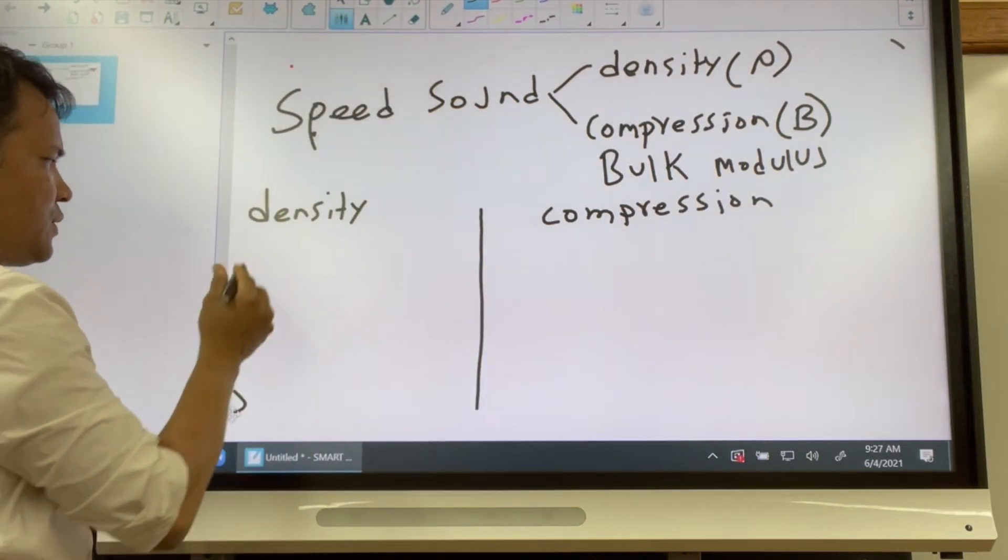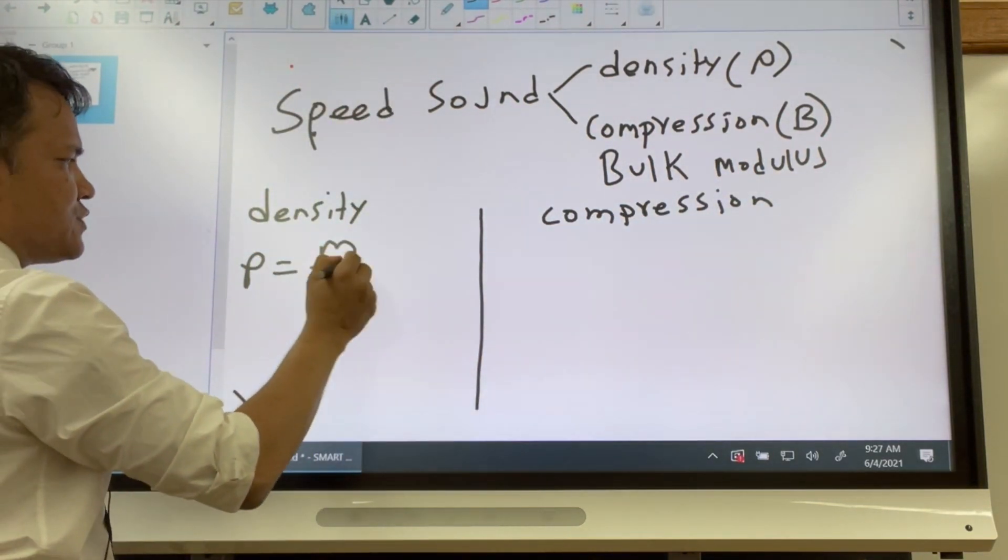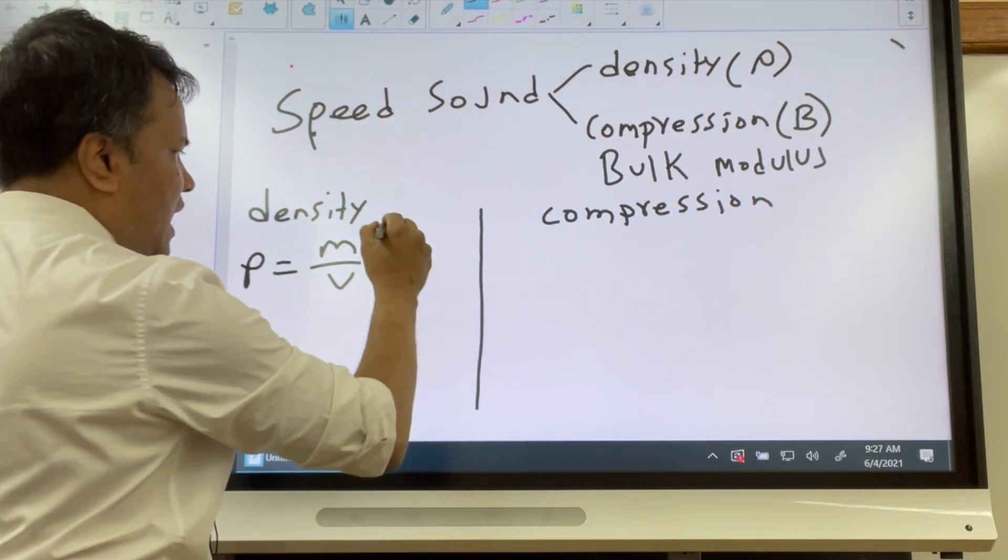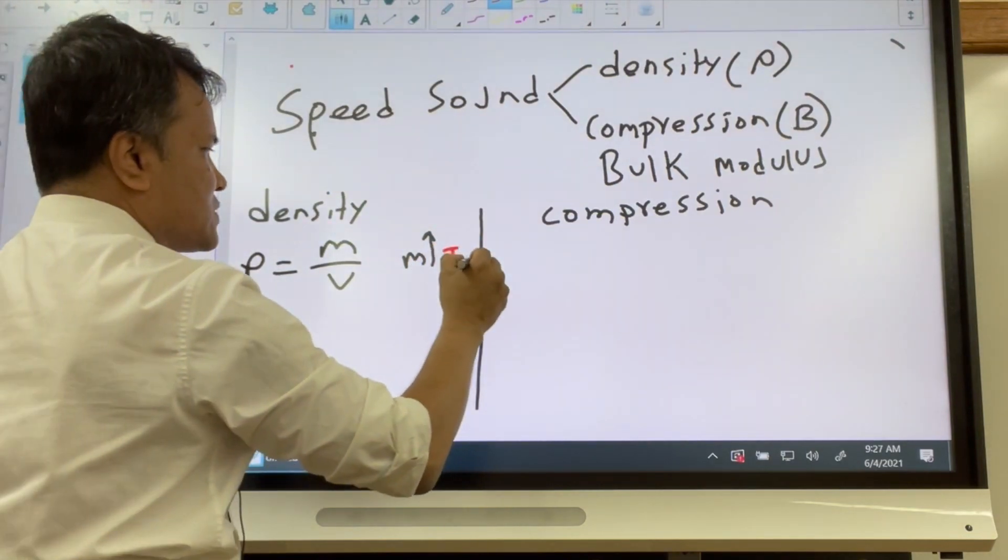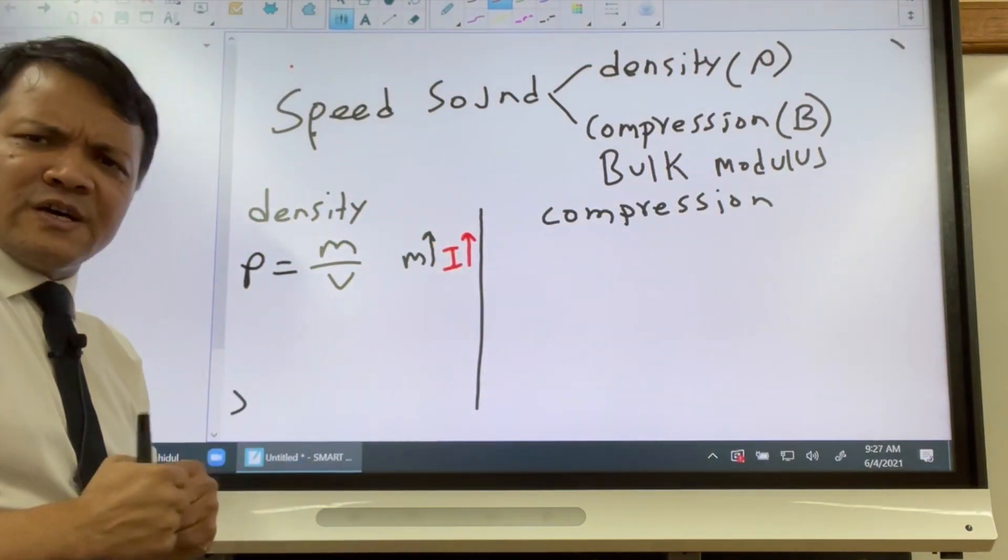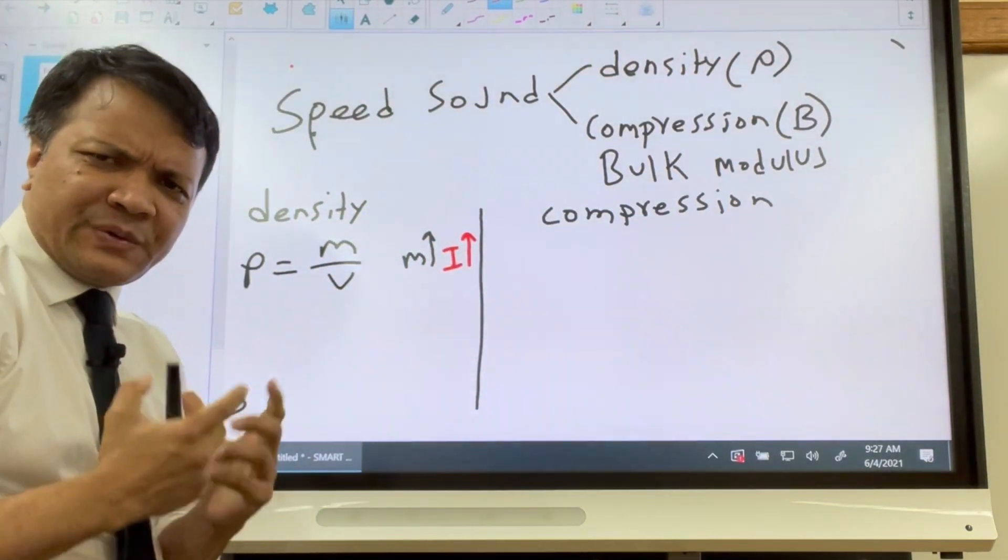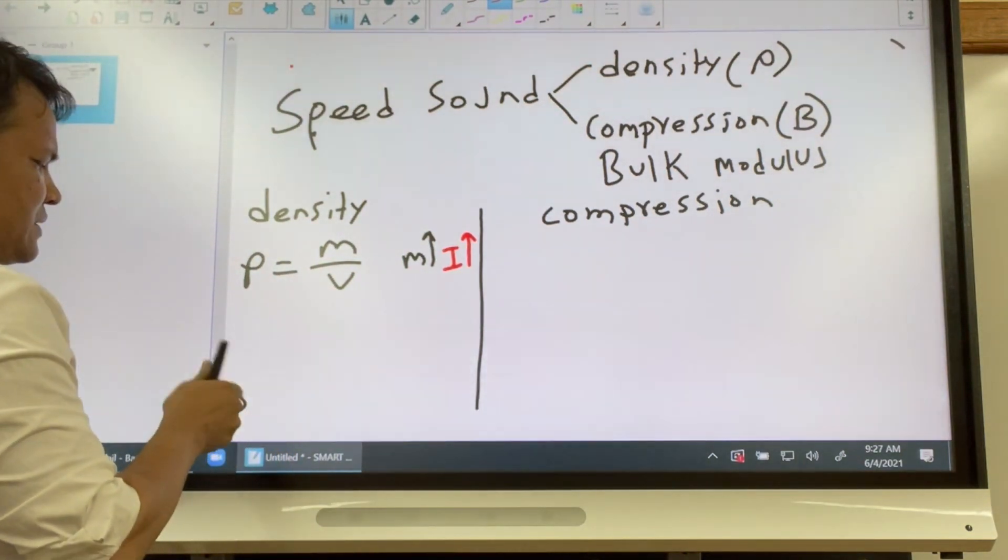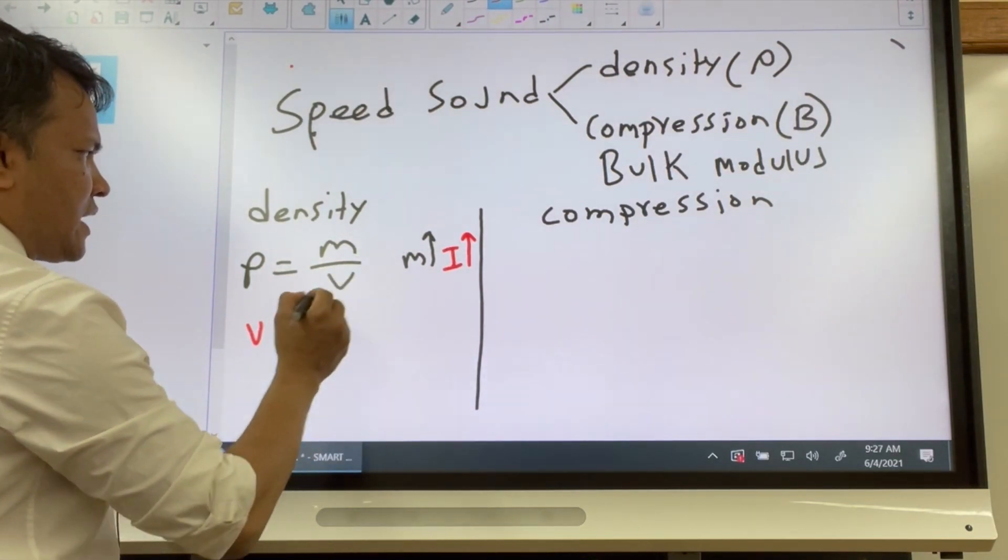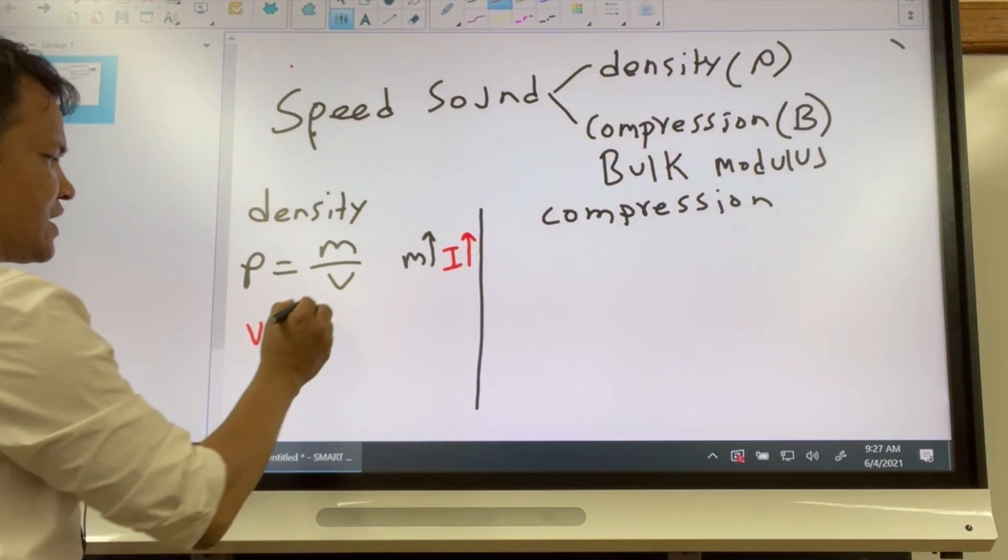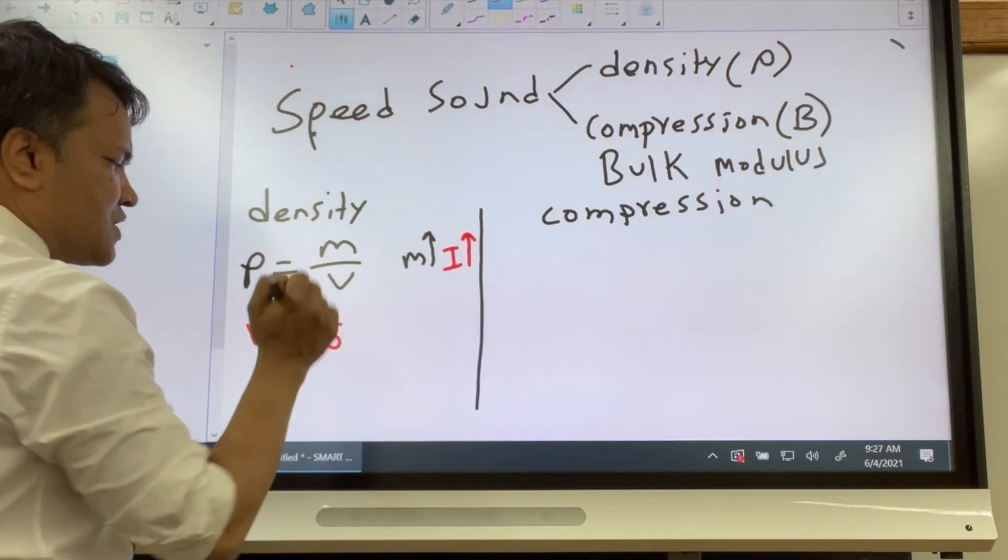Let's check the density on this side and the bulk modulus or compression on this side. The density, we know rho is equal to mass over volume. So if the mass goes up, what do you see? If the mass goes up, the inertia goes up, so then velocity has to go down. So what is the relation? The relation of velocity and the density is inverse of each other.